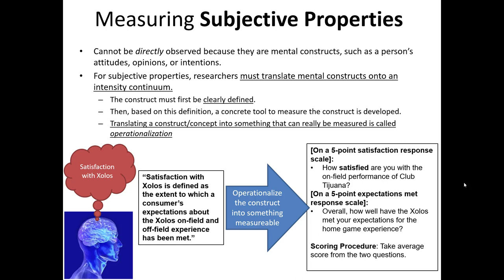Now we can operationalize it. In this example, we've operationalized satisfaction using two questionnaire items: on a five-point satisfaction scale, 'How satisfied are you with the on-field performance of Club TJ?', and on a five-point expectations-met response scale, 'Overall, how well have the Solos met your expectations for the home game experience?' Our scoring procedure says to take the average score from the two questions. We did in fact operationalize this construct into something concretely measurable — but that doesn't necessarily mean we've done it correctly.